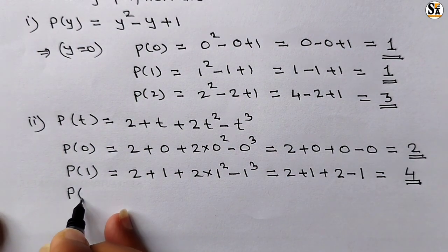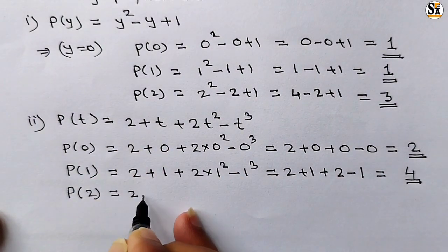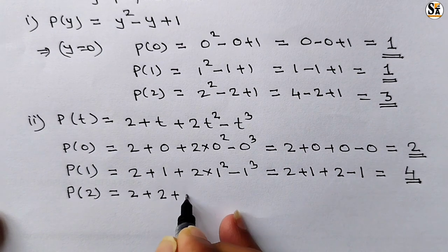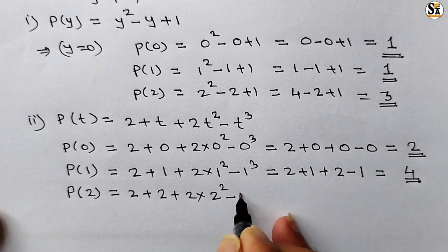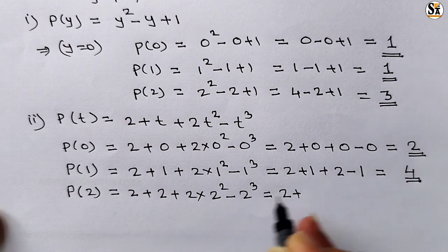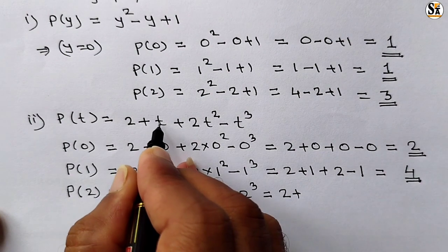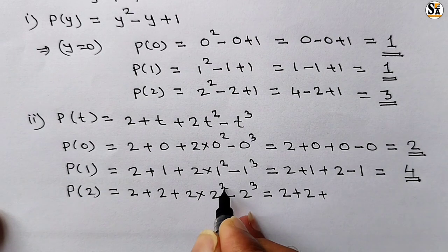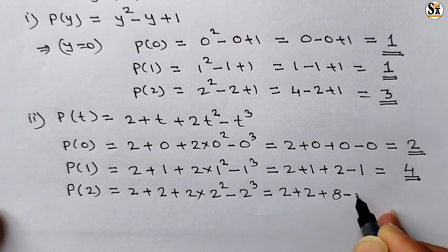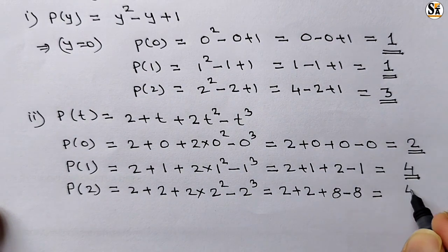In the third case, p(2) means put variable t equal to 2. So 2 plus 2 plus 2 into 2² minus 2³. The first 2 is constant, the second 2 is the value of t. Simplifying: 2 plus 2 plus 2 into 4 minus 8. That is 2 plus 2 plus 8 minus 8. The 8 and minus 8 cancel, leaving 2 plus 2 equals 4. So our answer is 4.